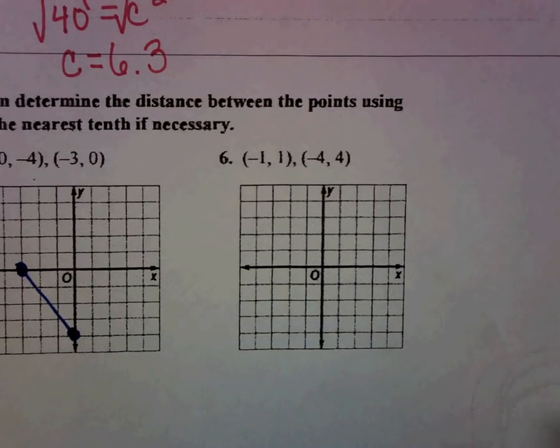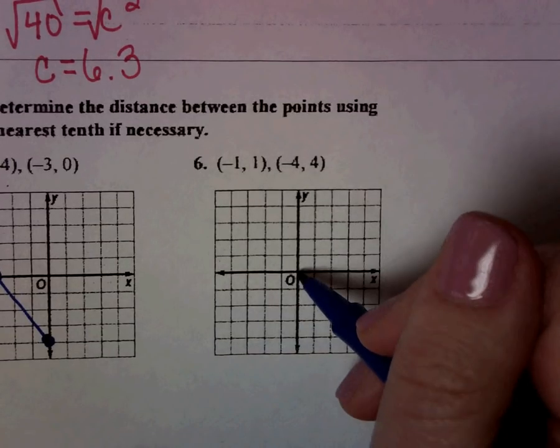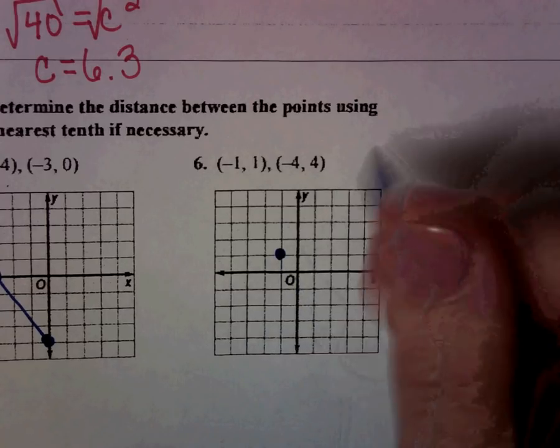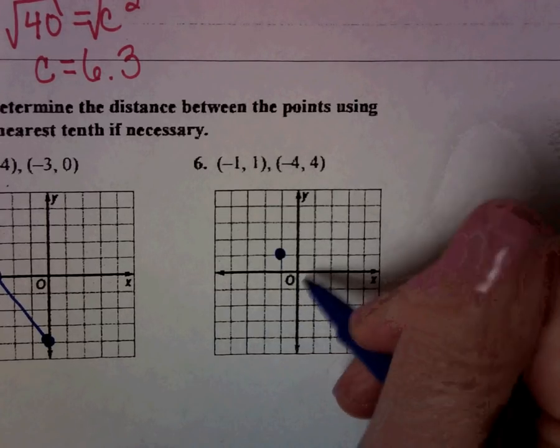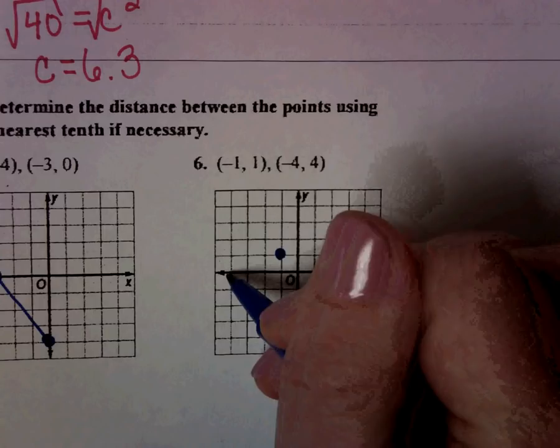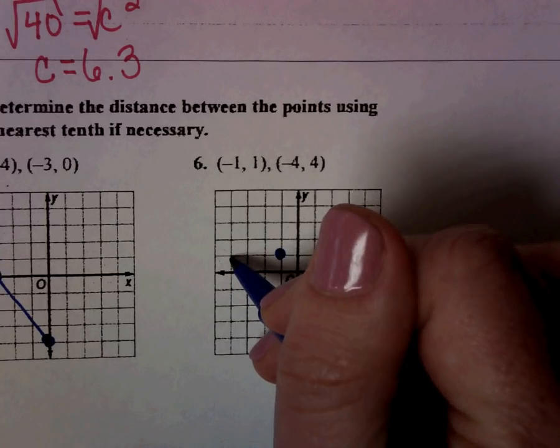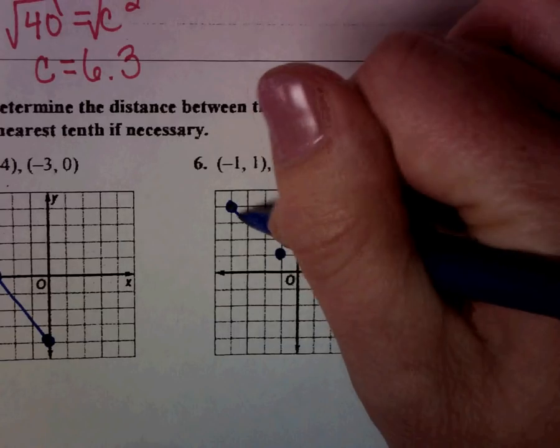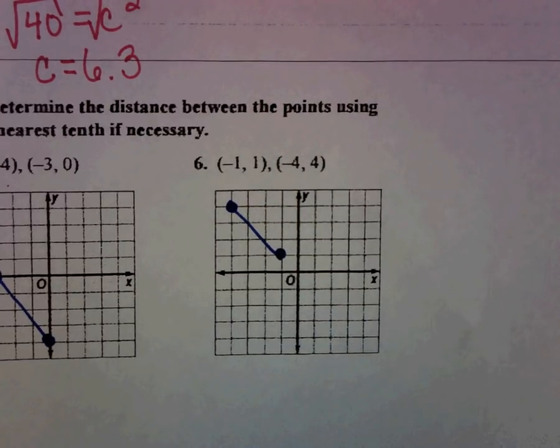So for number 6, negative 1, 1 would be negative 1 and then positive 1. And then for the next one, negative 4, 1, 2, 3, 4. And then positive 4, 1, 2, 3, 4. And so here is the line that I'm trying to find the distance between. Now you draw your right triangles and test your answers. And when you're ready to check, raise your hand and I will come check for you.